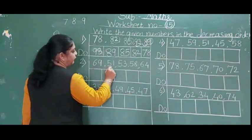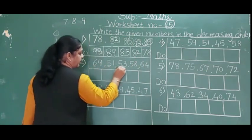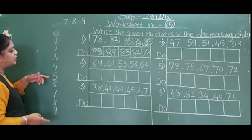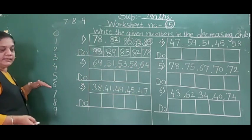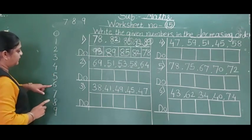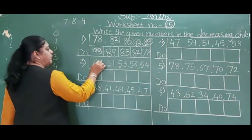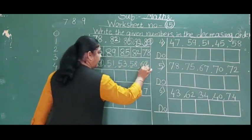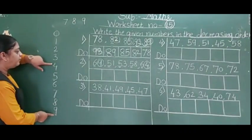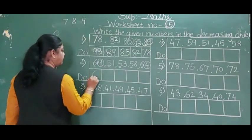Second descending example: 69, 51, 53, 58 and 64. First digits: 6 and 5. 5 is above and 6 is below. Below numbers are always big, so 6 is the bigger number. For the 6-group: 69 and 64. Second digits 9 and 4 — 4 is above, 9 is below, so 69 comes first.